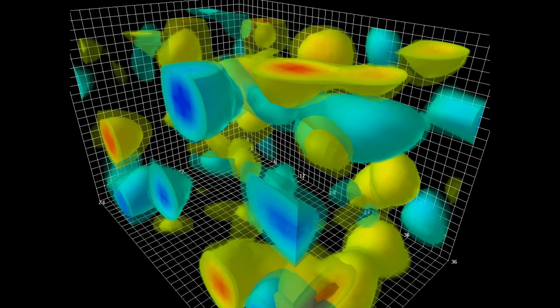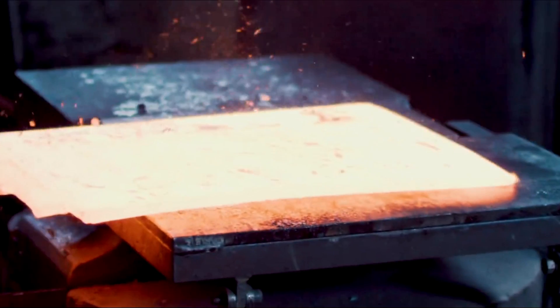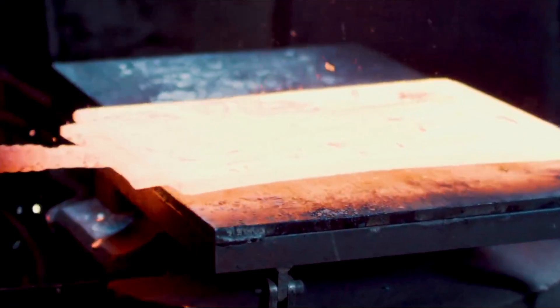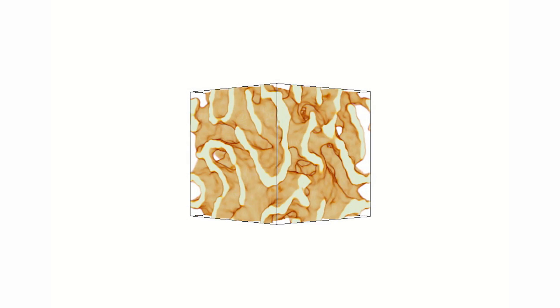According to the models, the density of nuclear pasta makes it 10 billion times stronger than steel. That's far and away the most durable material in the known universe.